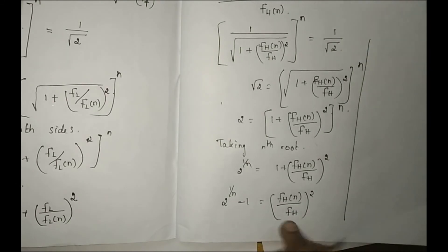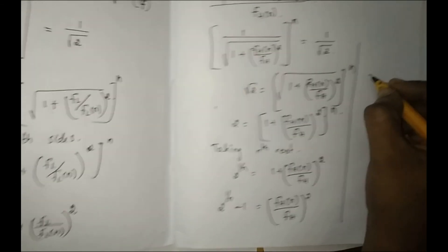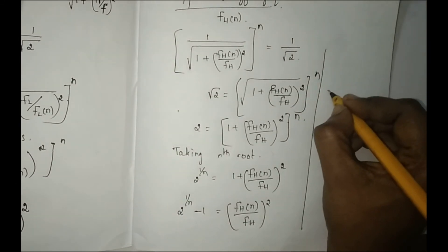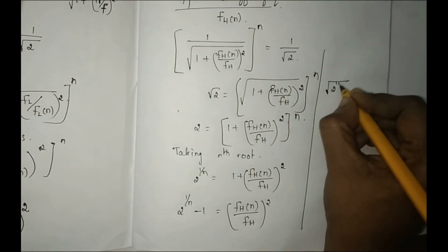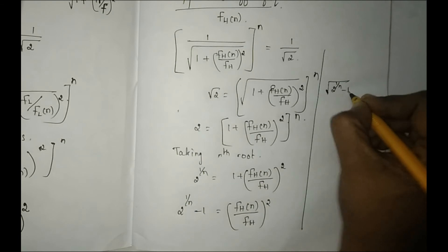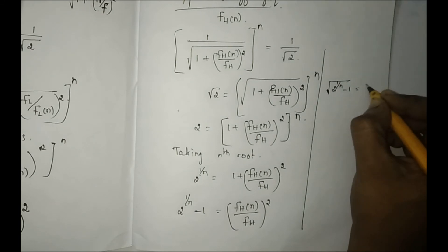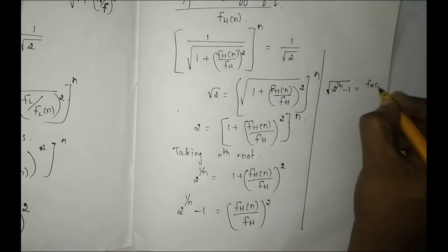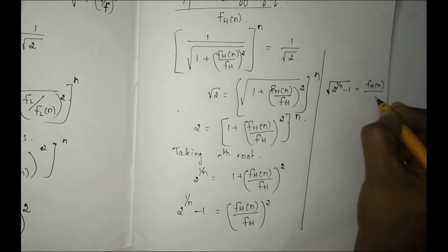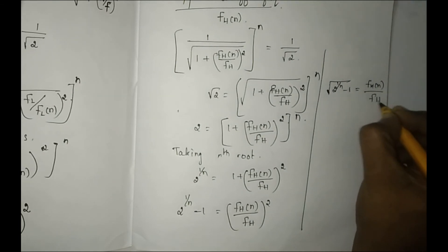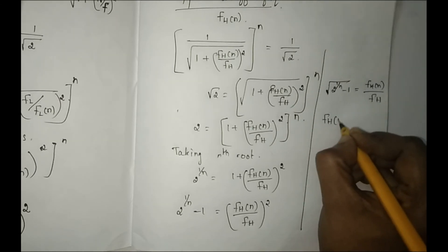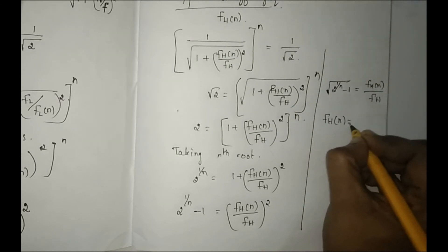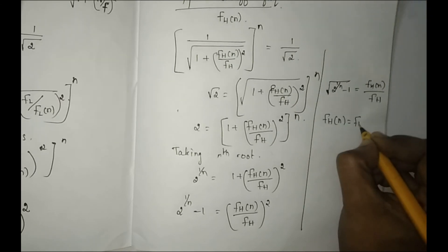Again, taking the square root on both sides: root of (2 to the power 1/n minus 1) is equal to fH(n) divided by fH. So fH(n) is equal to fH multiplied by root of (2 to the power 1/n minus 1).